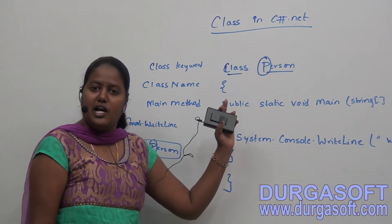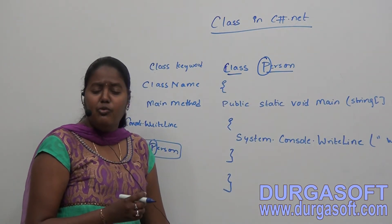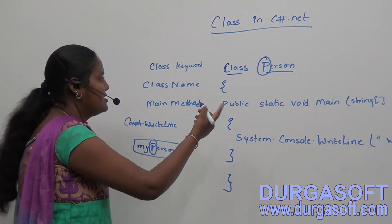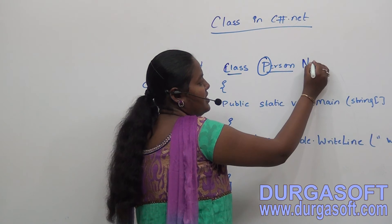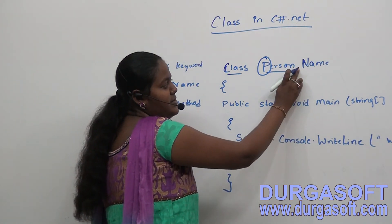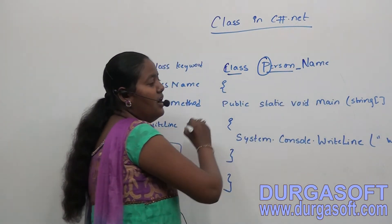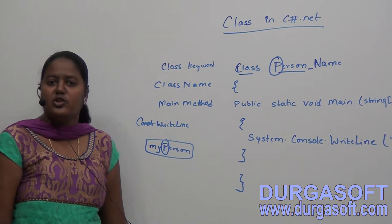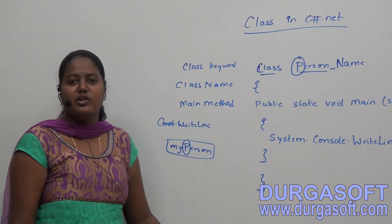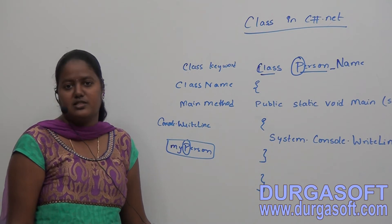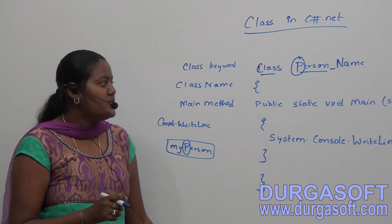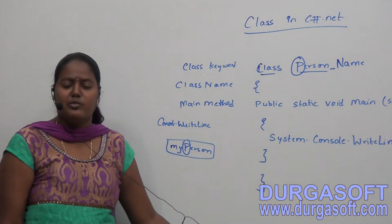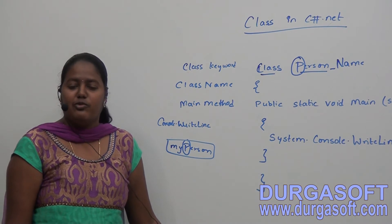It is mandatory that the class name must start with an alphabet. We can use digits 0 to 9 and the special character underscore, but the class name cannot start with digits or underscore. If you want a space in the name, you have to use the underscore symbol instead. For example, 'person_name'. Also, a class name cannot be a keyword - 'class' and 'if' are keywords so we cannot use them as class names.